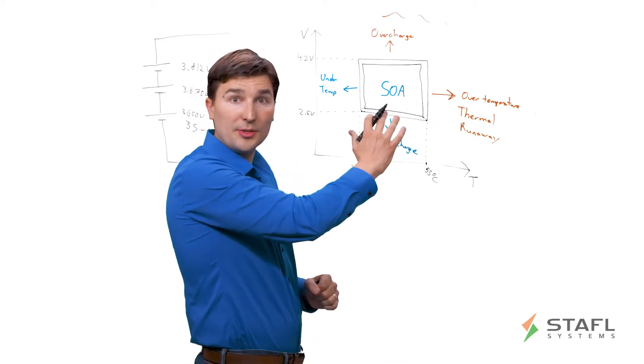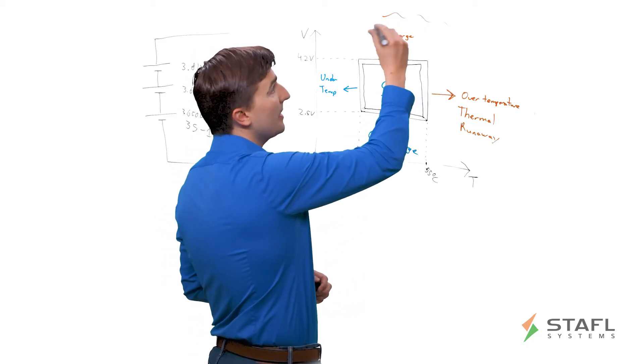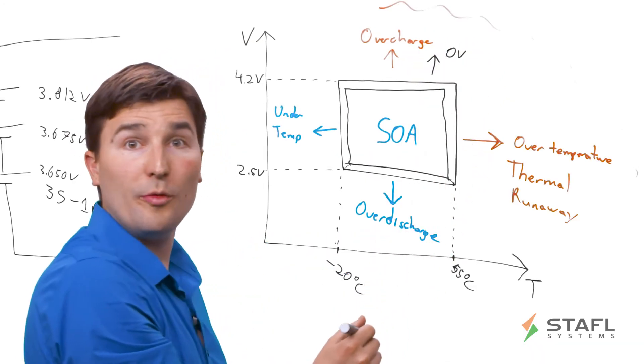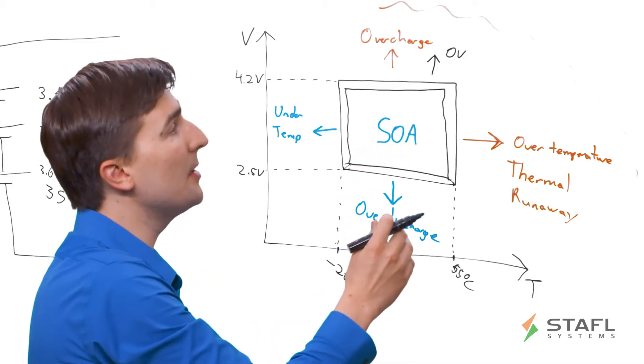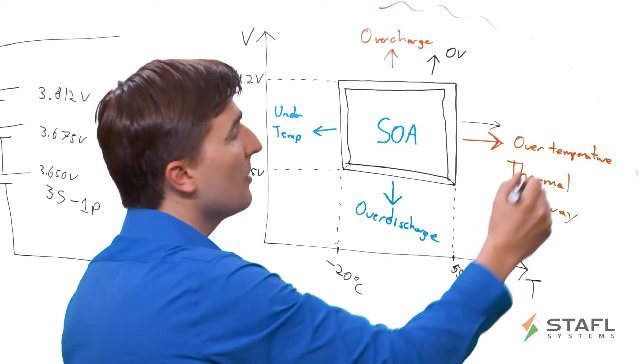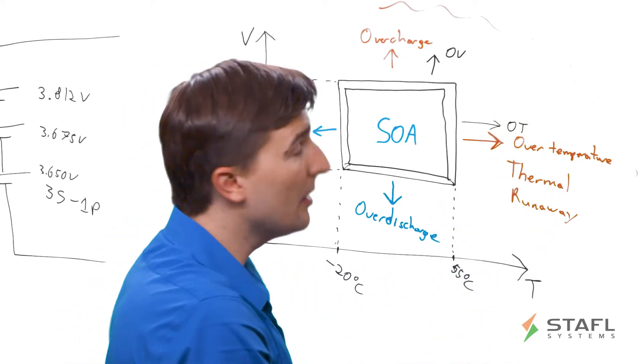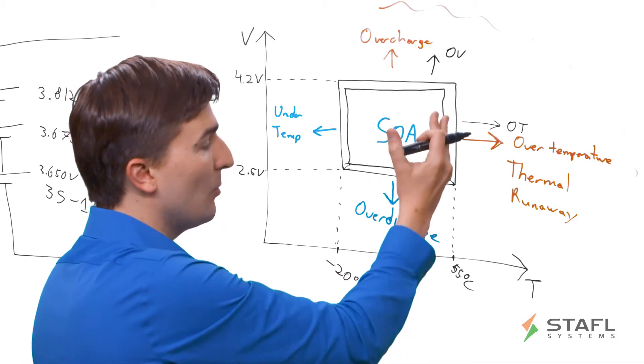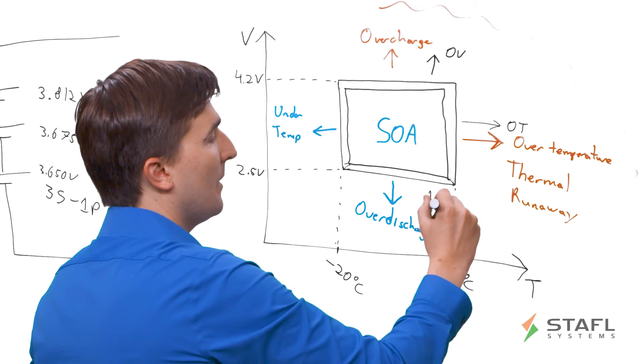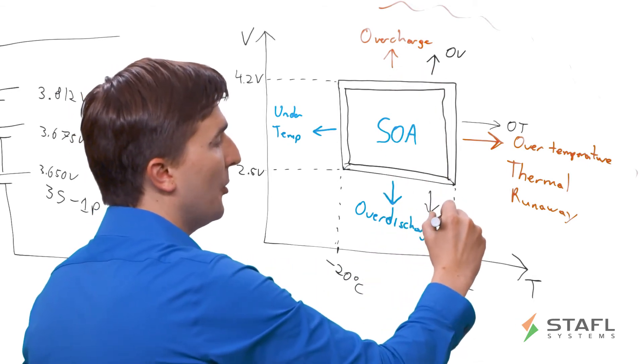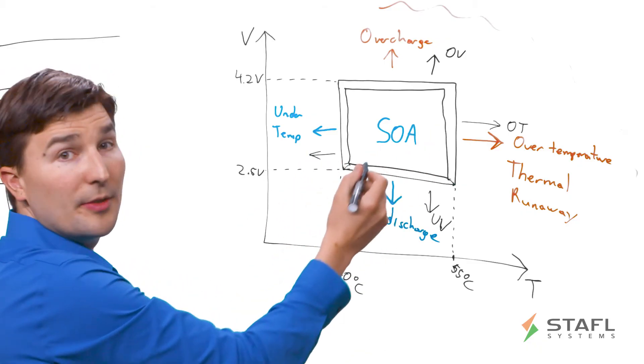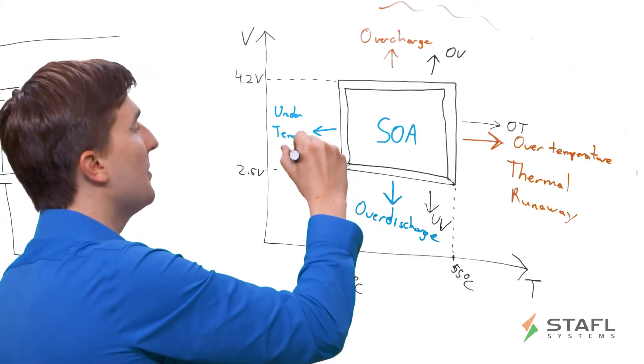And so what are the actual faults that the BMS is looking for? So to protect against the overcharged condition, we have an over-voltage fault or an OV fault. So you see a cell OV fault in the BMS that's protecting against this condition. This direction, we have an over-temperature fault or OT fault. So the BMS would detect that one or more cells are getting above a safe temperature and shut down operation. Going this direction, we have a cell under-voltage fault, denoted by UV. And then going this direction, we have a cell under-temperature fault, denoted by UT.